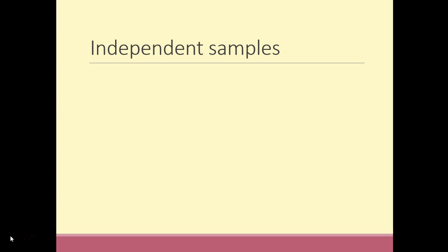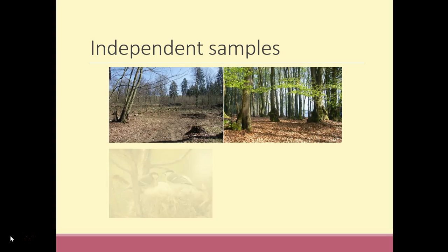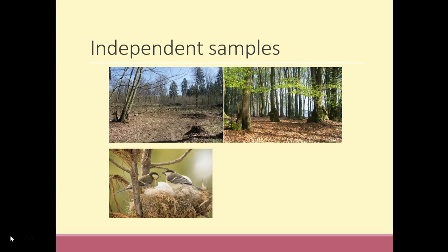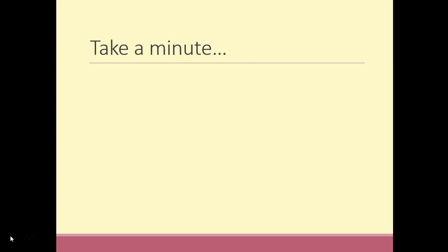Another example could be looking at the effects of two different habitat management strategies on the nesting behavior of a given species of bird, where different management strategies would be used in different areas of woodland. At this point it's a good idea to take a minute to conceptualize the concept of independent samples.